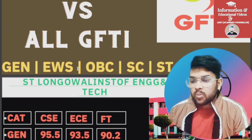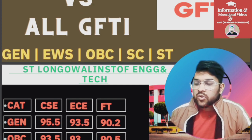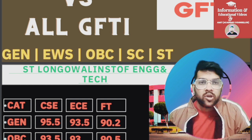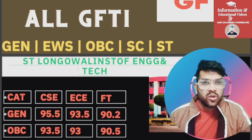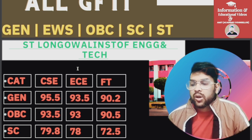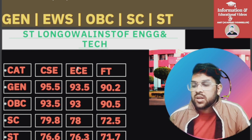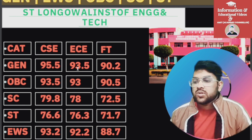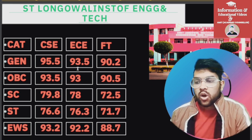First, Sant Longowal Institute of Engineering and Technology. For CSC, 95.5 percentile is required for General; for ECE, 93.5; for Food Technology, 90.2. For OBC: 93.5, 93, and 90.5 for CSC, EC, and Food Technology respectively. For SC: 79.8 for CSC, 78 for EC, and 72.5 for Food Technology. For ST: 76.6, 76.3, and 71.7. For EWS: 93.2, 92.2, and 88.7 for CSC, EC, and Food Technology respectively.